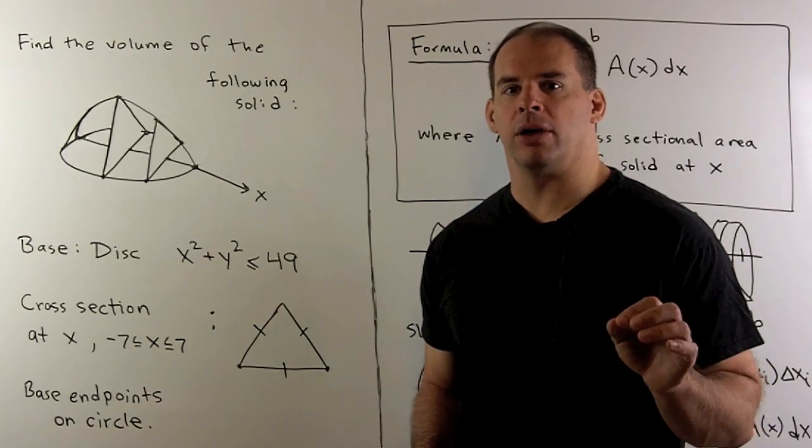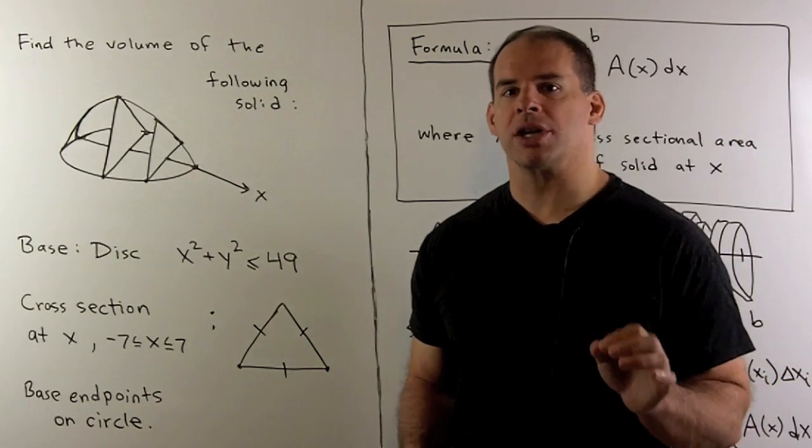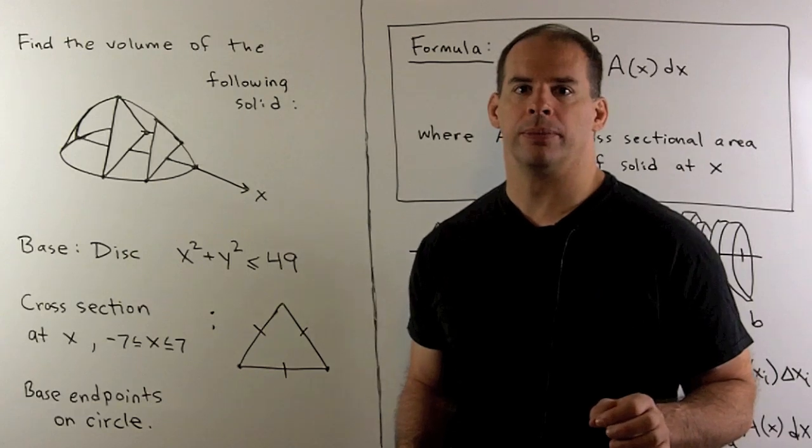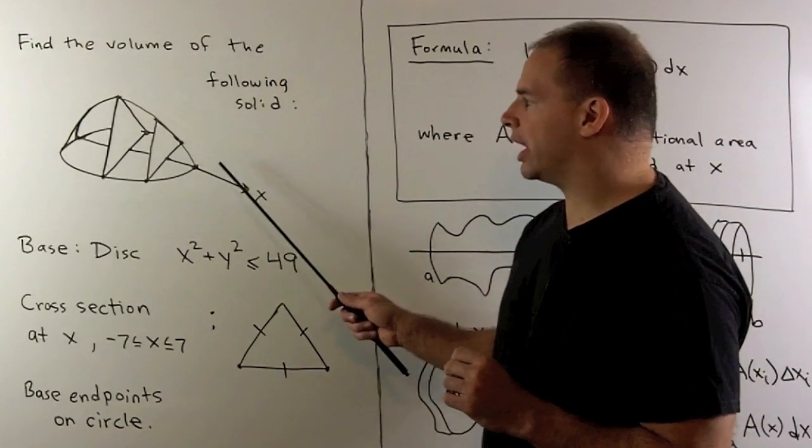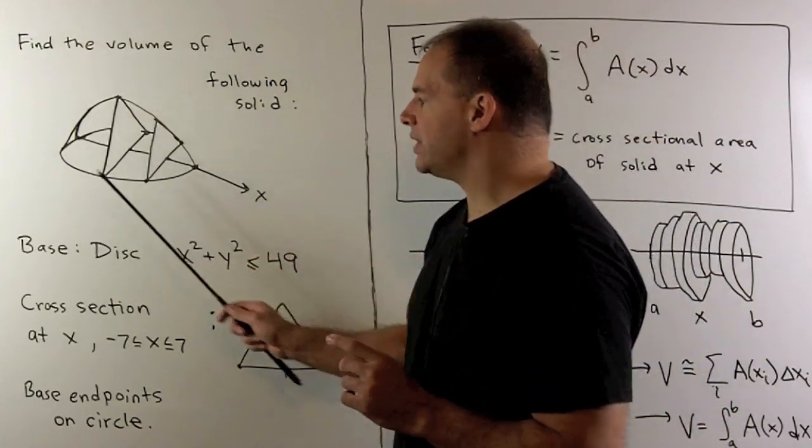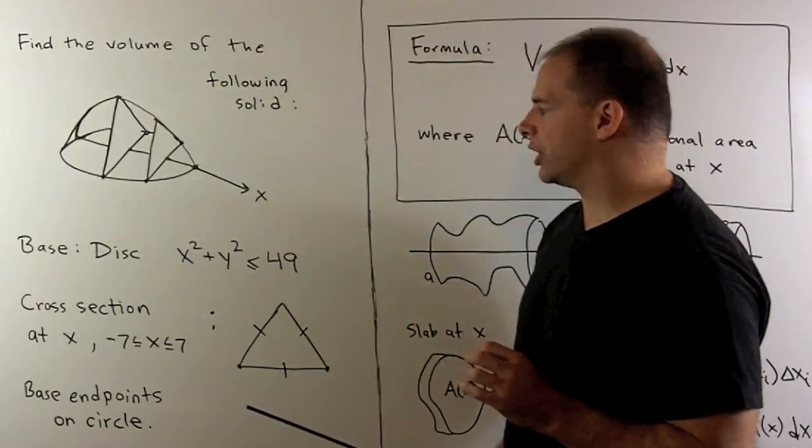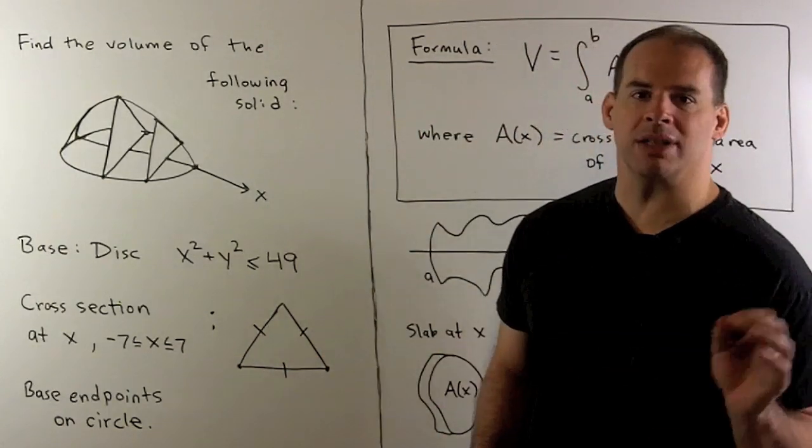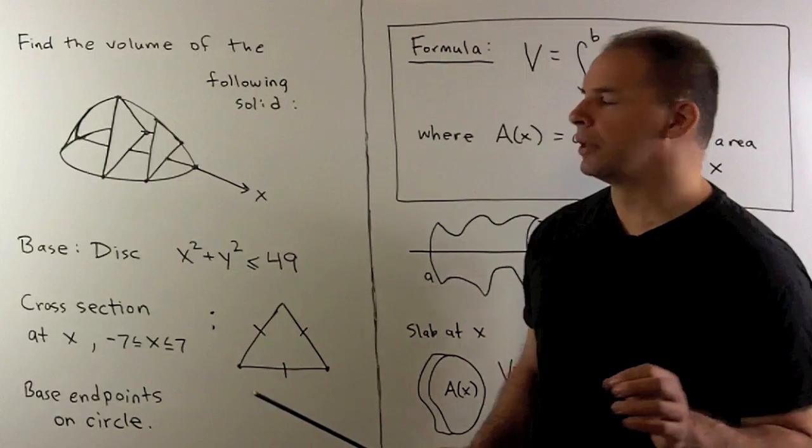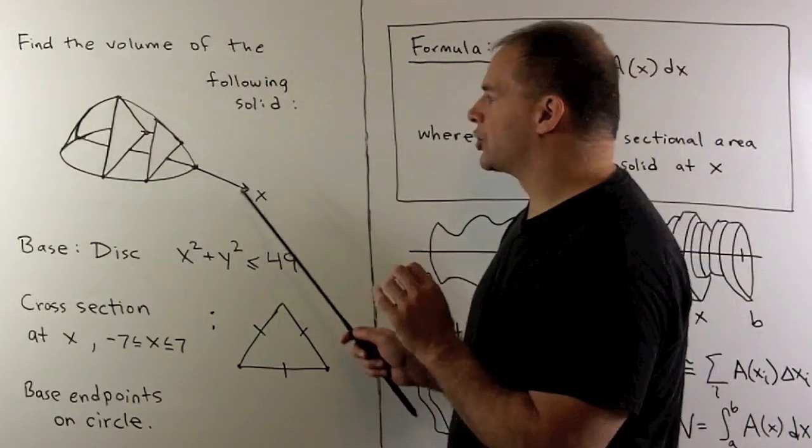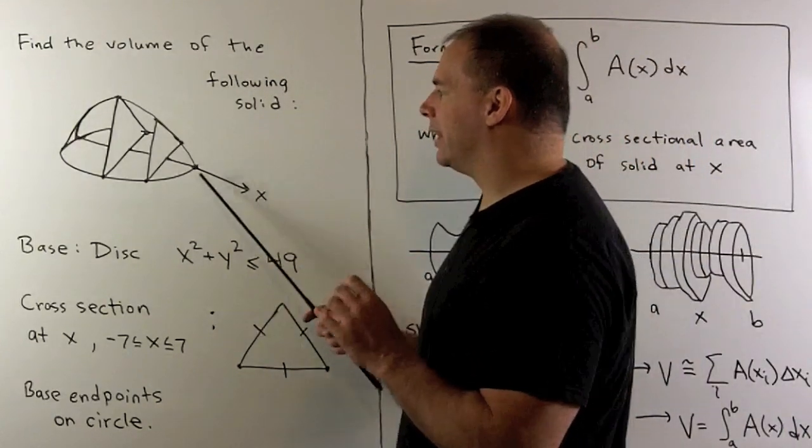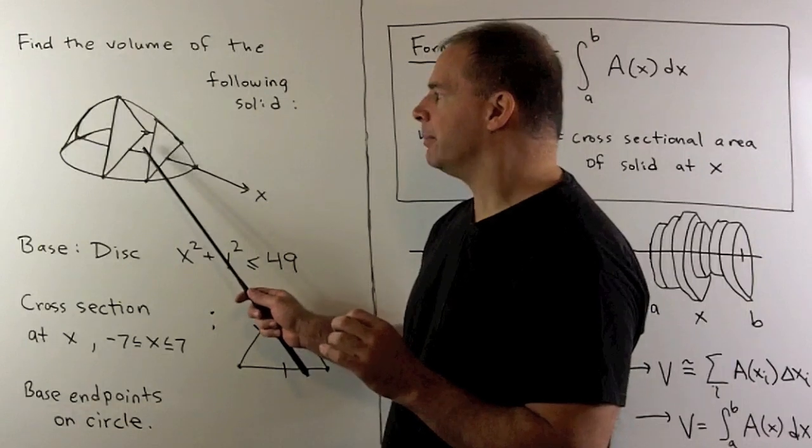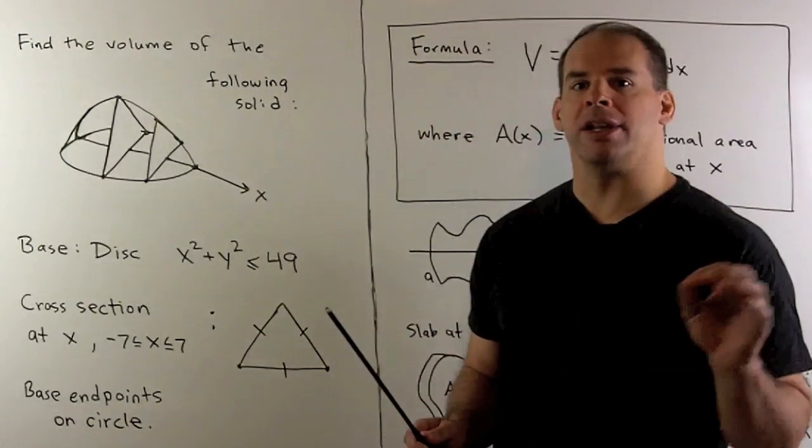Here's a problem on finding the volume of a solid using cross-sectional areas. The solid that we're interested in, it's going to have as its base the disk given by the equation x squared plus y squared is less than or equal to 49. We're taking the circle centered at the origin in the xy plane with radius 7, keeping the circle and its interior.